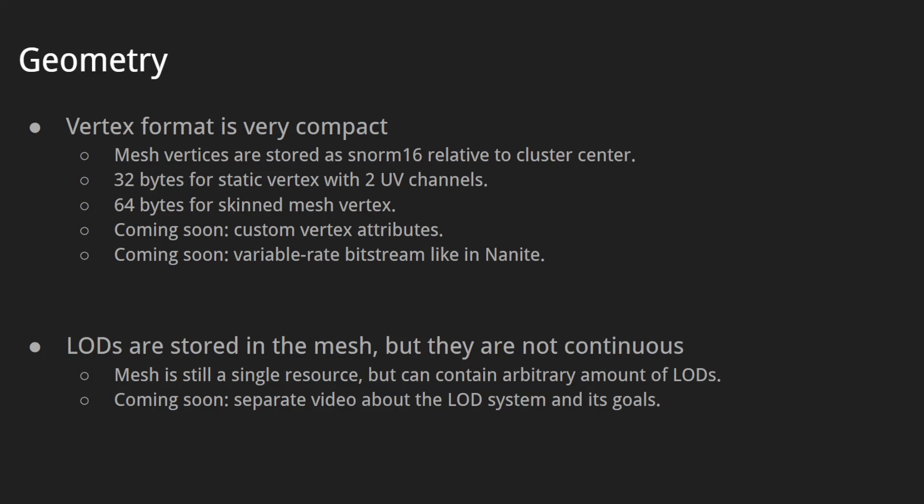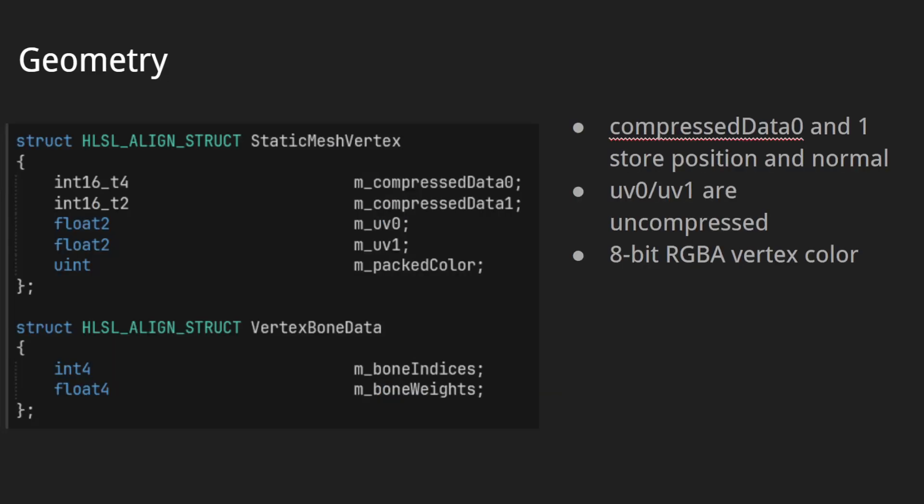Coming soon, we'll have support for custom vertex attributes and variable rate bit streams like in Fortnite. We store levels of detail in the mesh, but they're not continuous — mesh is still a single resource but can contain an arbitrary amount of LODs. There will be a separate video about the LOD system and its goals. Here is our vertex data: there is a static mesh vertex and vertex bone data. Compressed data 0 and compressed data 1 store positions and normals. UV0 and UV1 are uncompressed UV channels, and there is also an 8-bit RGBA vertex color.